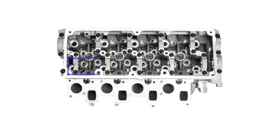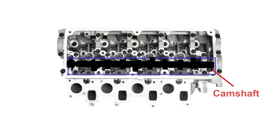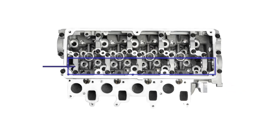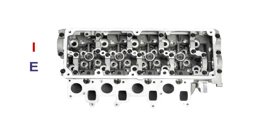The upper surface of the cylinder head in the blue area is fitted with screw holes for fixing the camshaft and on the bearing cover of the camshaft. The markings indicate the exhaust side and inlet side respectively.